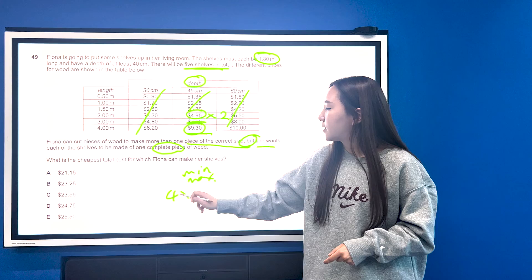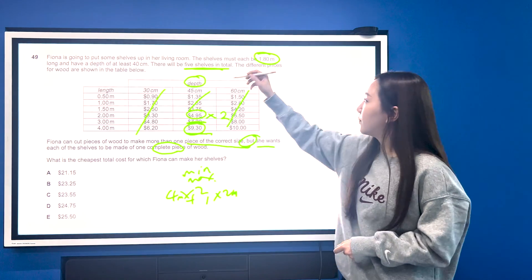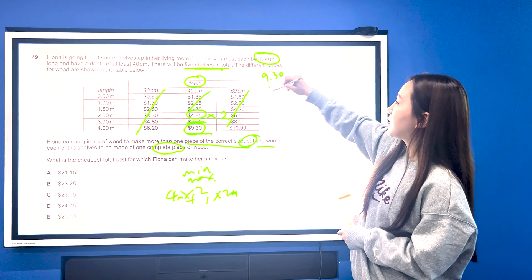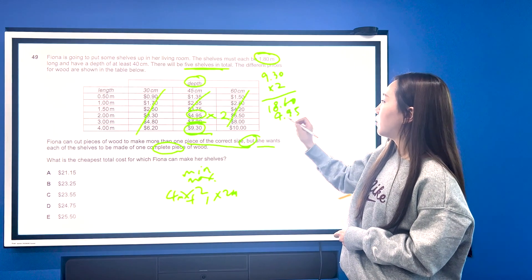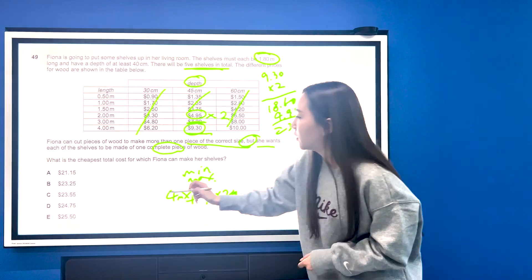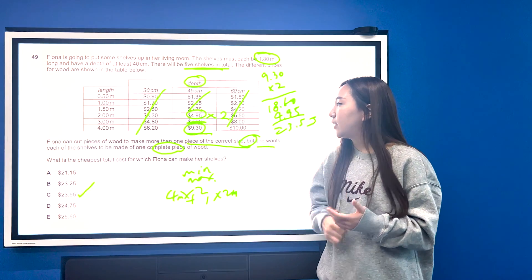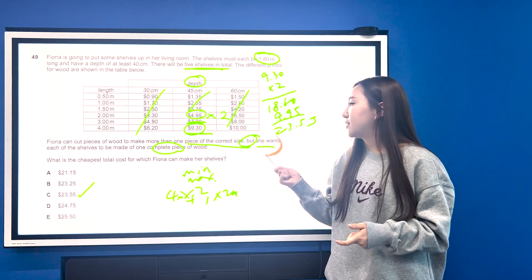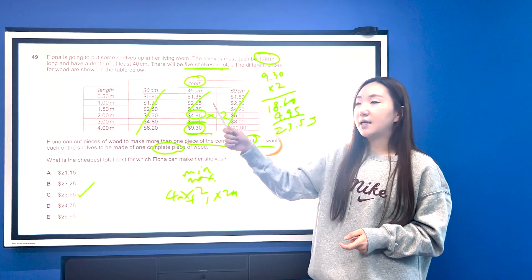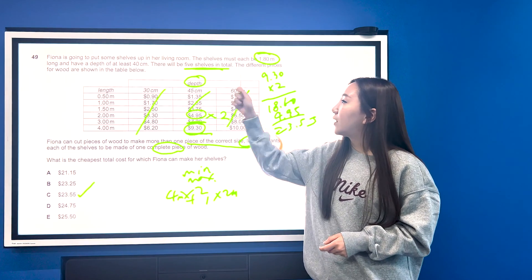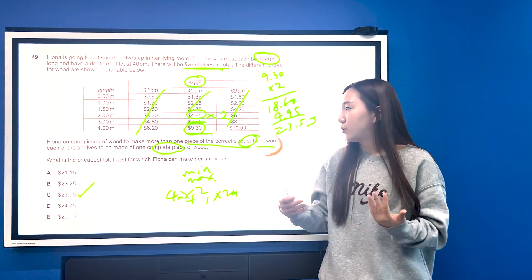So basically we're going to do 4m wood times 2 plus 1 of the 2m wood. So now the sum becomes very simple. We just have to do $9.30 times 2, which gives us $18.60. And then we want to add on $4.95, which is going to give us $23.55. So the answer will be C. So with these questions, just really watch out for the secret condition that is usually the same. Make sure you're only focused on the correct and useful information by cutting out as you go along. And then just make sure you've looked carefully at all the conditions. There won't be many, but just be systematic about it and work through one by one. Again this kind of question we do like.